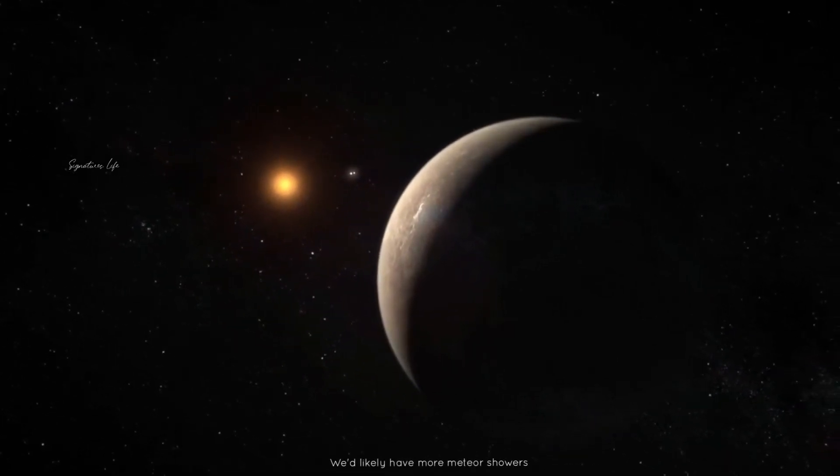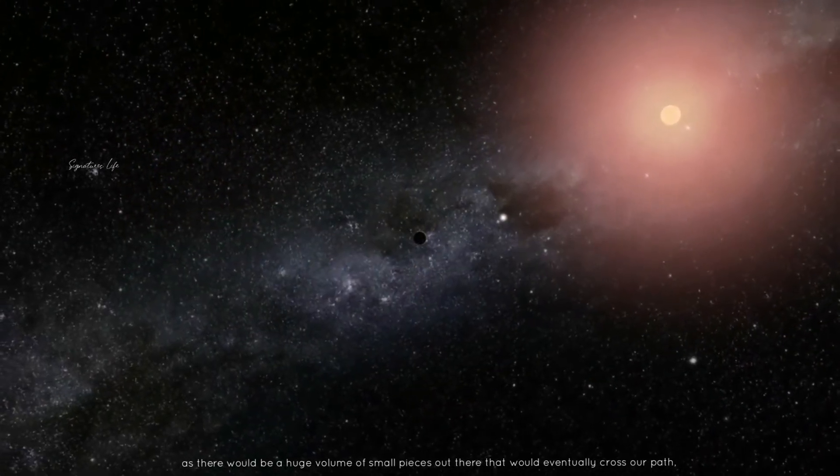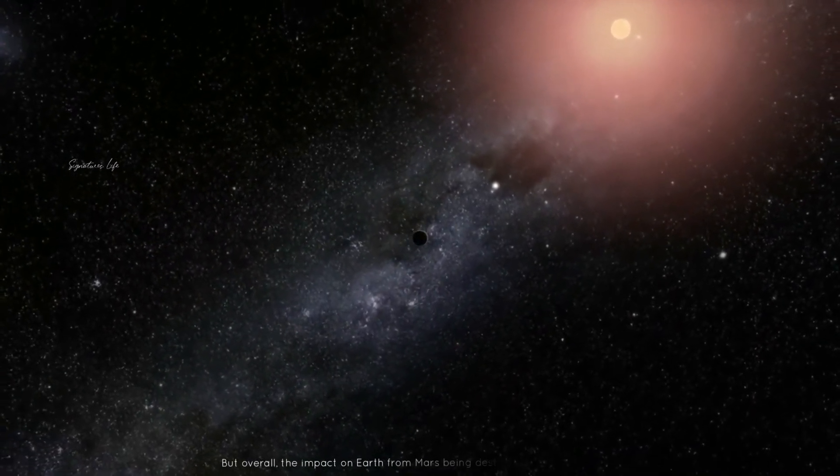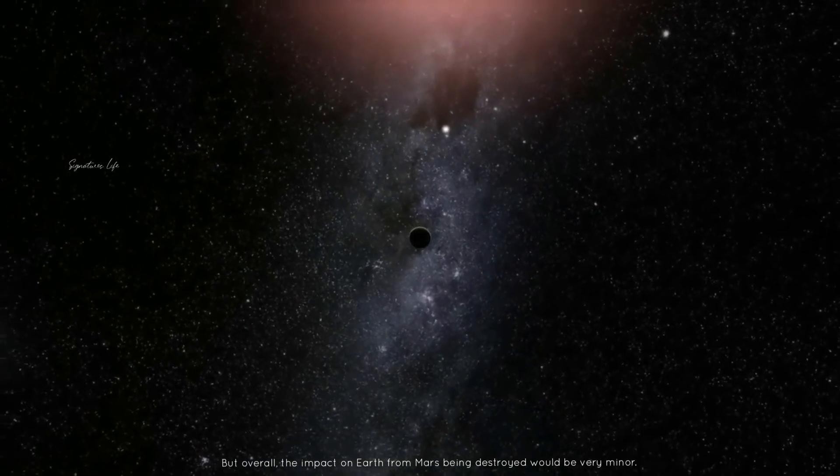We would likely have more meteor showers as there would be a huge volume of small pieces out there that would eventually cross our path. But overall, the impact on Earth from Mars being destroyed would be very minor.